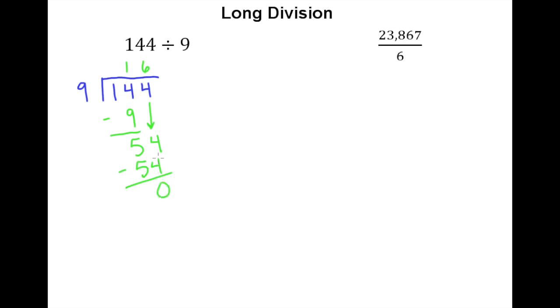Now the remainder is 0. There are no more digits to drop down, so that tells me that the answer to 144 divided by 9 is 16. So just to recap this process, 9 would not go into 1, so then I considered the first two digits, 9 went into 14 just one time. I took that product of 1 and 9, placed it under 14, and took the difference.